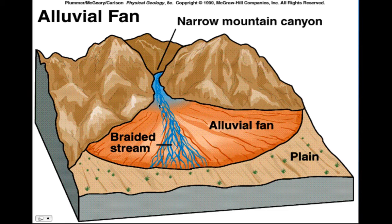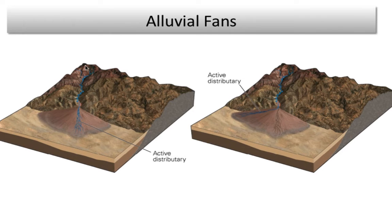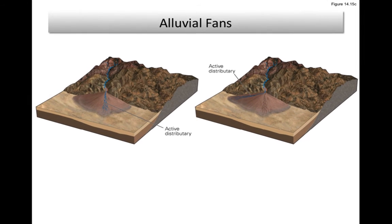At some point the stream can't get through the deposited load, so it picks a new channel. This is a picture from the textbook showing one of these wine glass canyons or alluvial fans. You can see more energy in the narrow mountain channel, but when it opens up to the wide valley, you see the distributaries occurring. It keeps picking new directions, and the alluvial fan forms in this fashion — more and more runoff distributes the water into this fan-shaped structure.